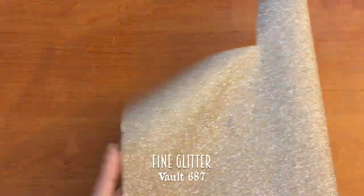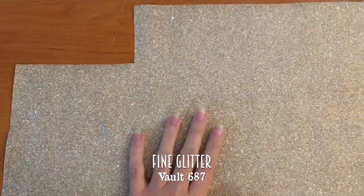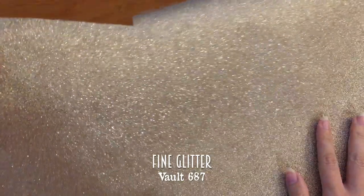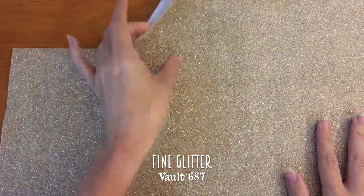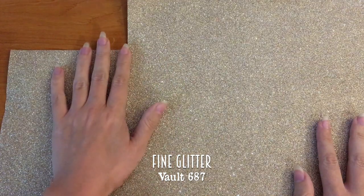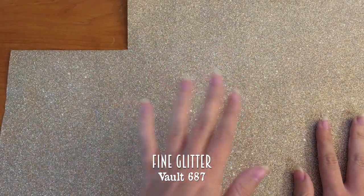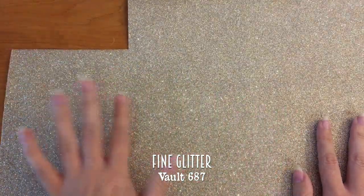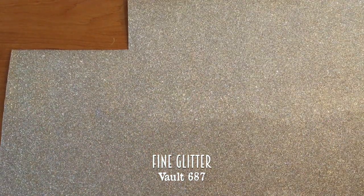So then we have two other categories. We'll start with the fine glitters. So this one is vault 687 which is the potter's vault. So this is a light gold. And as you can see it's really glittery. It's glitter textured. So it doesn't shed. But it's real glitter. I mean it's just not an effect or it's not covered with some material over. It's the glitter texture. But this one is light gold. Vault 687.